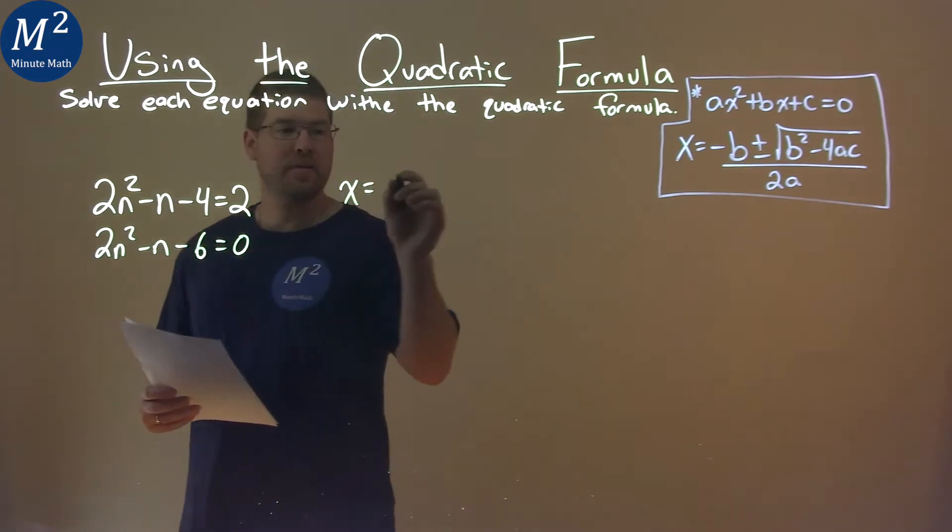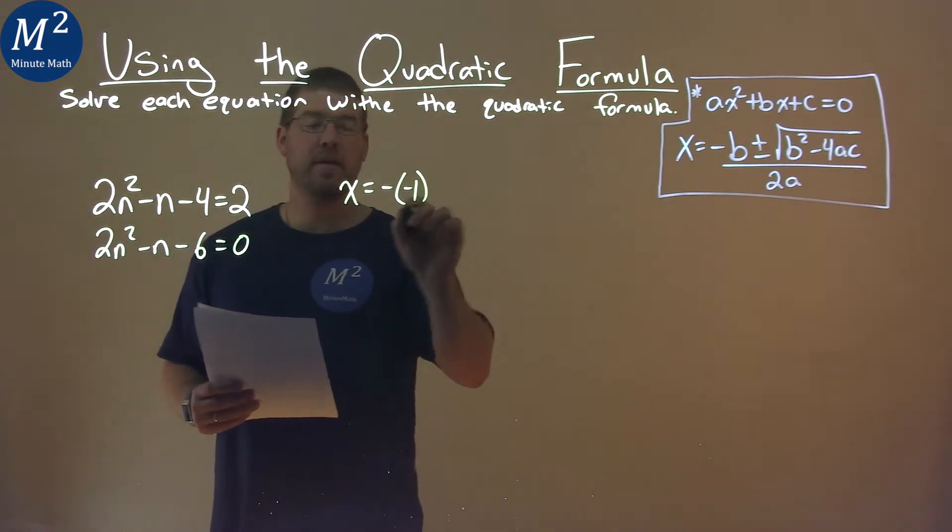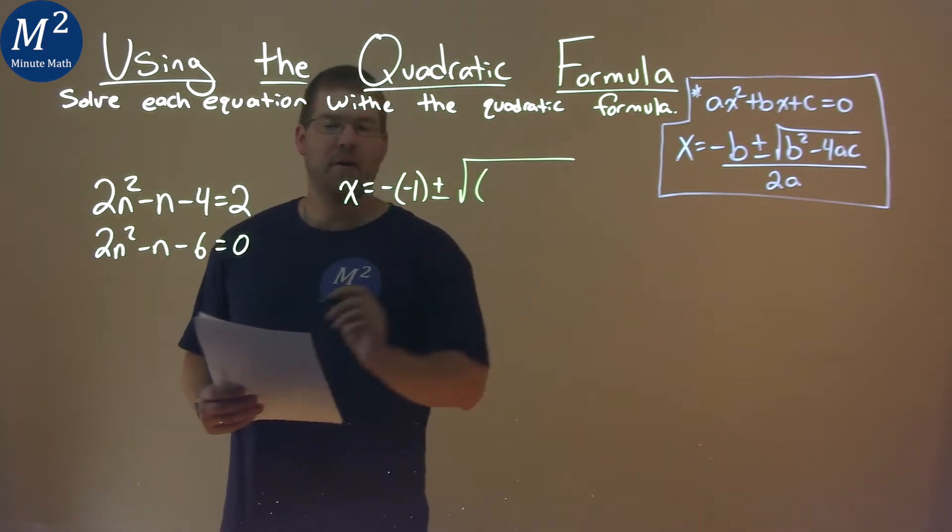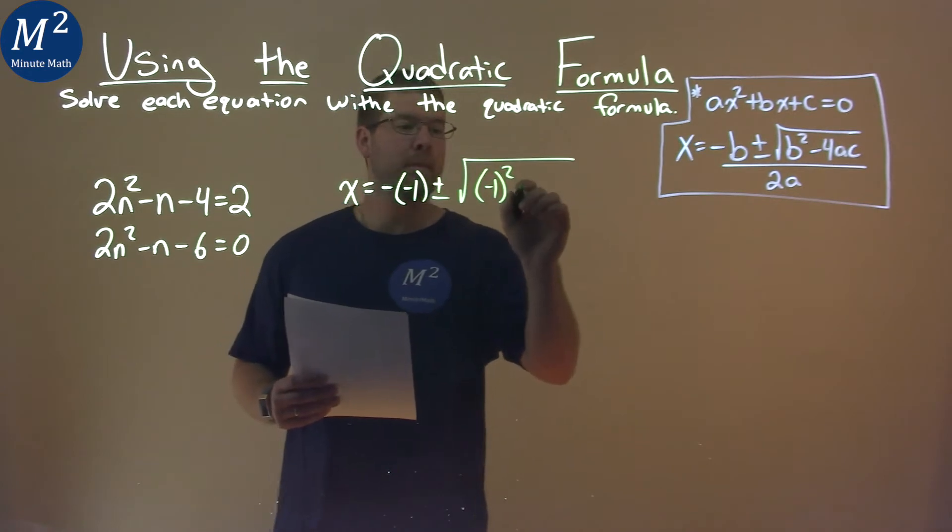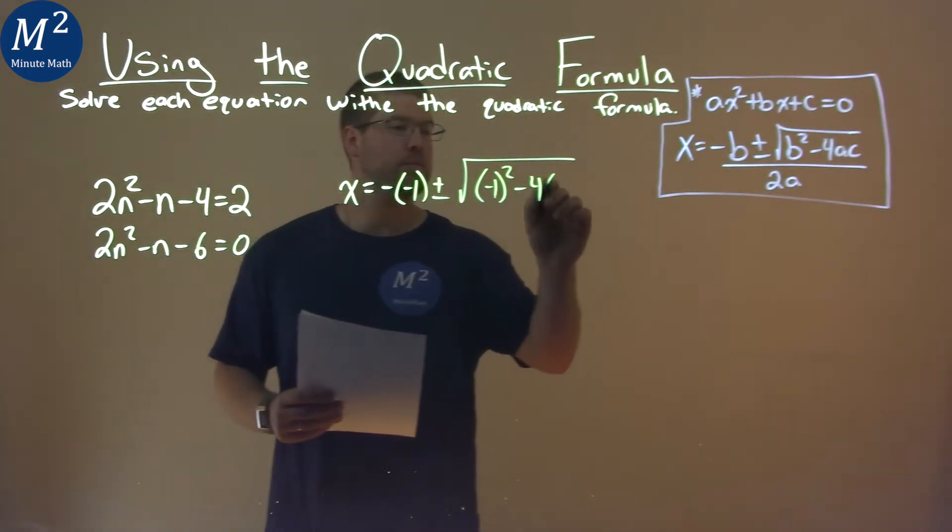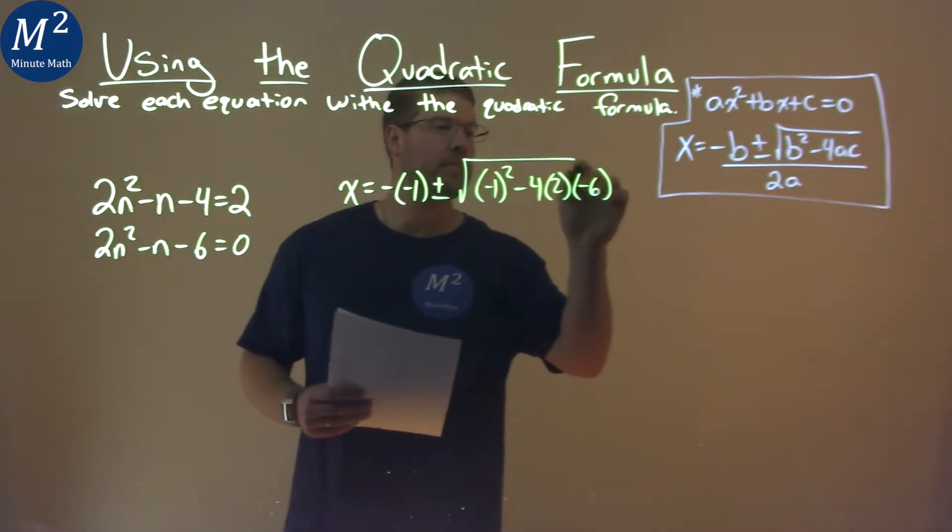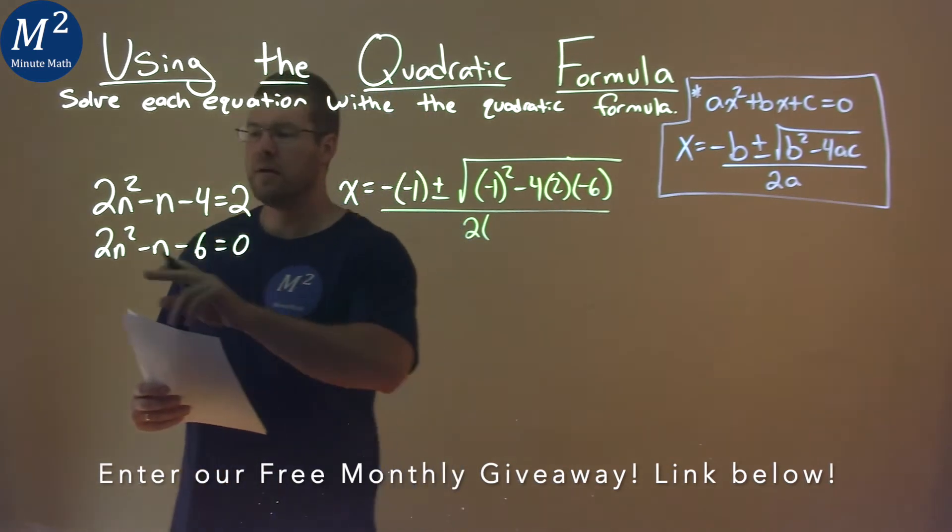x equals negative b, and our b value is -1. Don't forget the double negative here. Plus or minus the square root of b², so (-1)², minus 4 times a, which is 2, times c, which is -6. All of that is over 2 times a, which is 2.